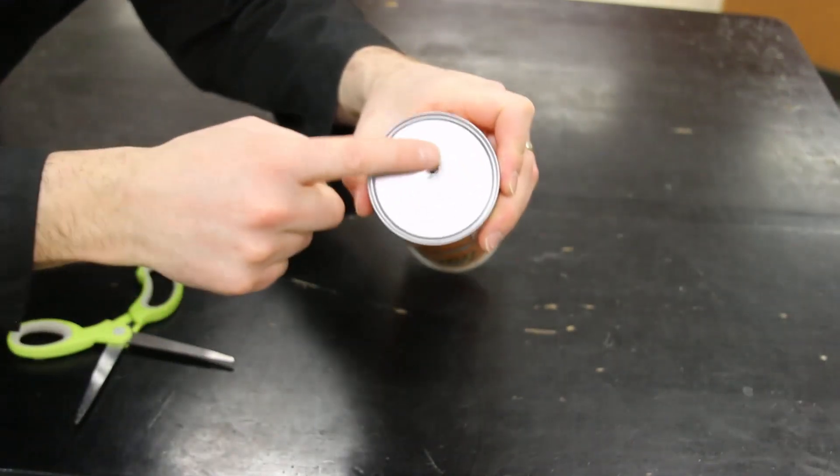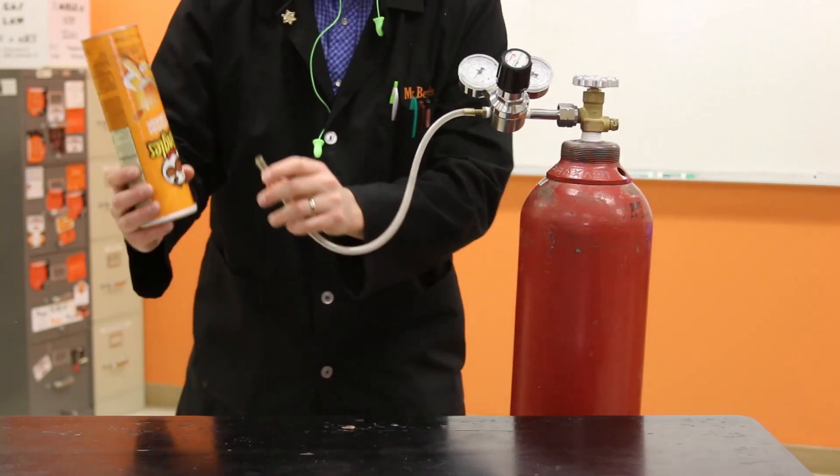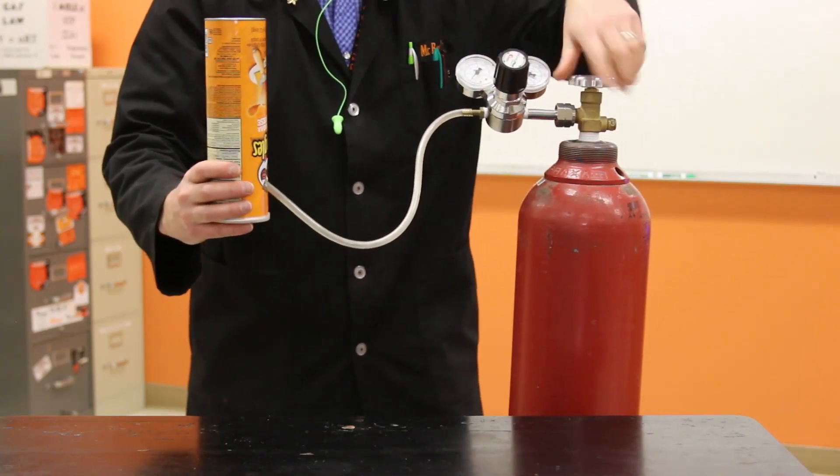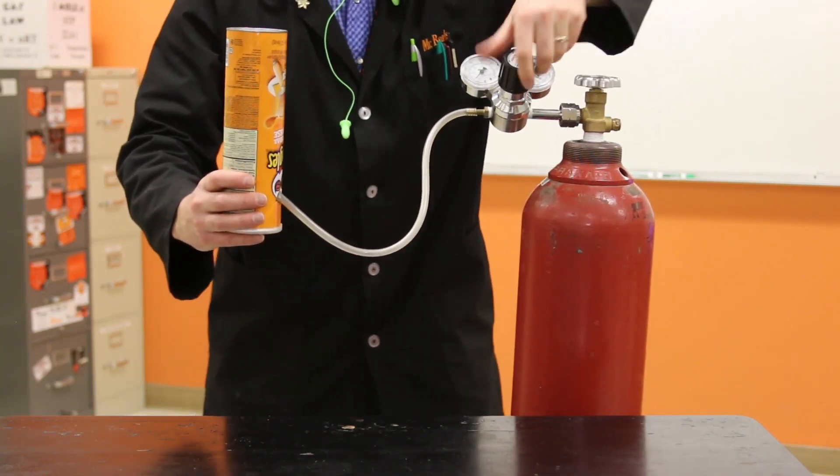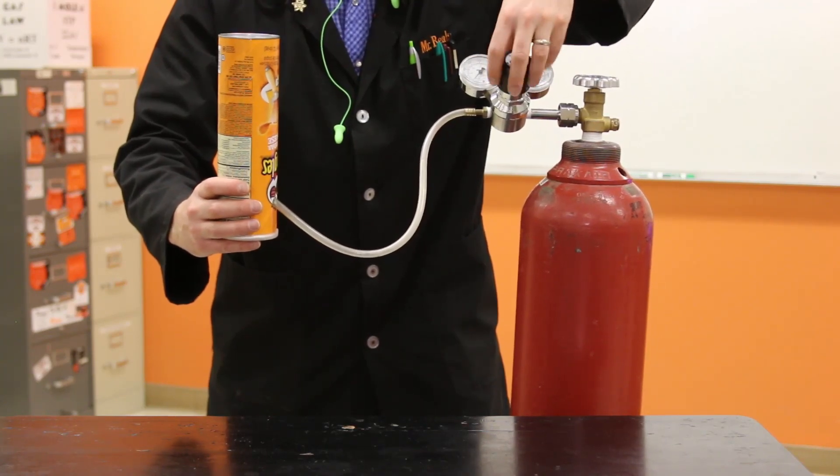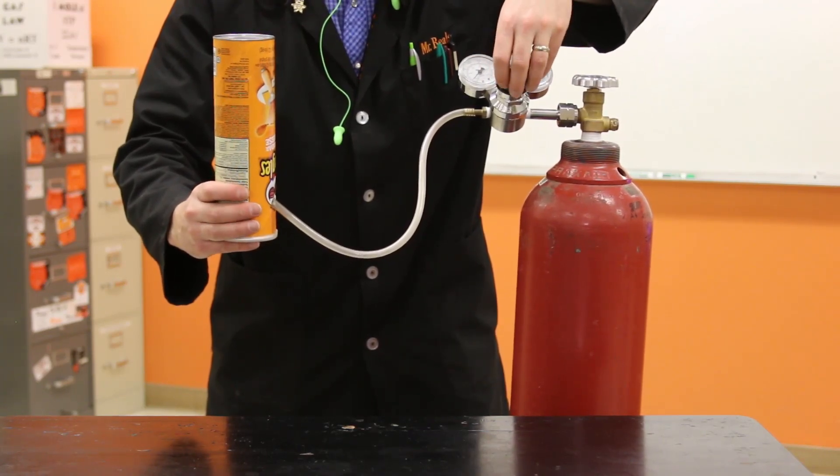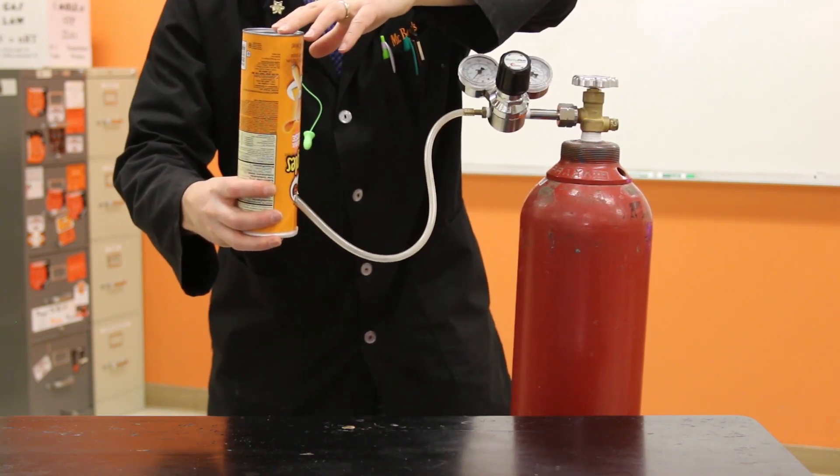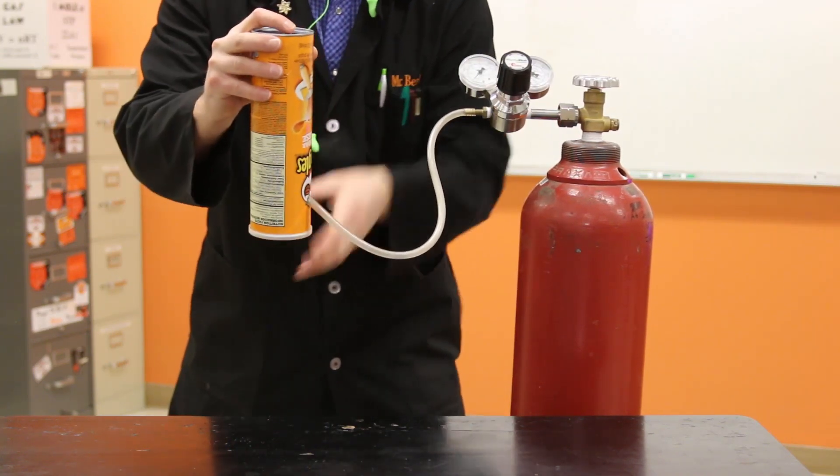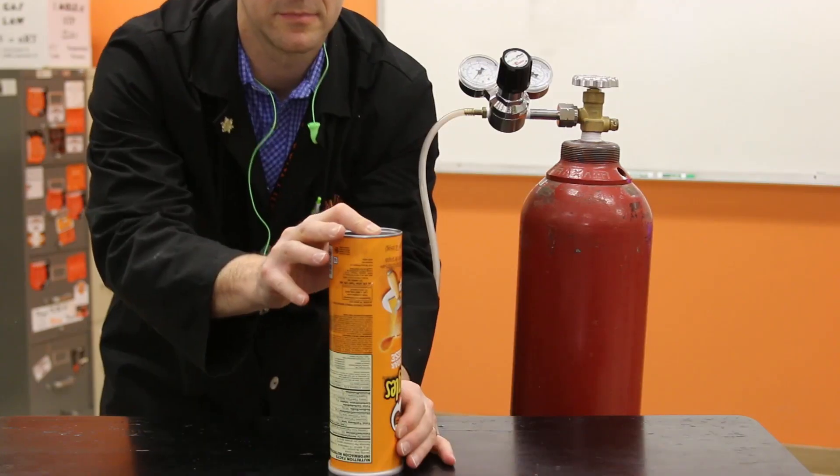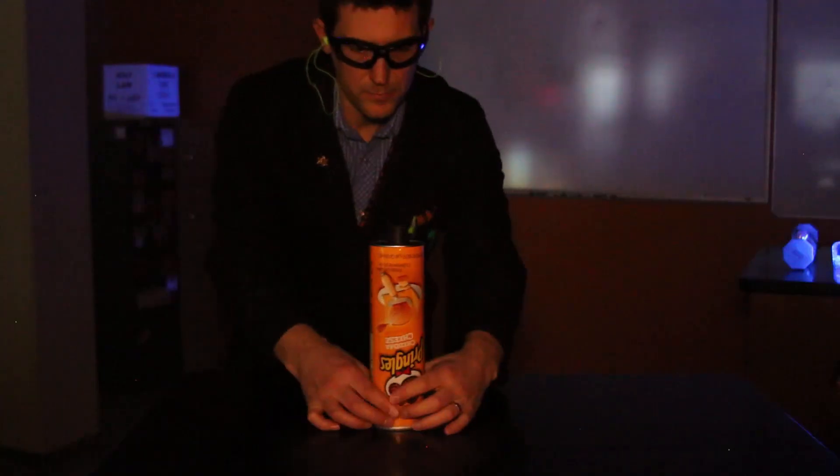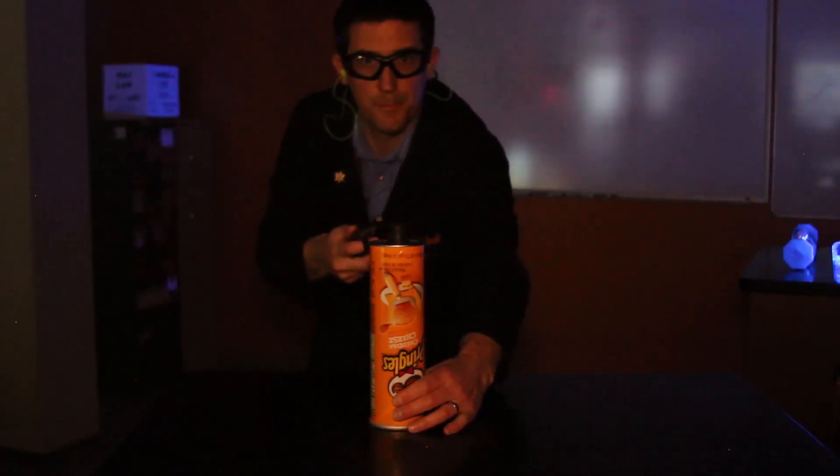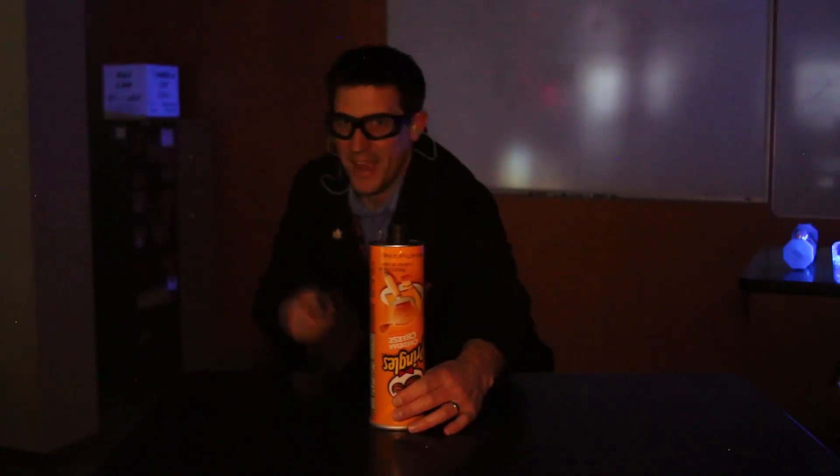You're gonna pop a hole in the bottom, which is now going to be the top, and that's where the gas is going to be able to come out. So I hook that back up to my hydrogen tank and fill it up. Now I want to fill it all the way up with hydrogen to get all of the oxygen and the other air out of there, that way it'll burn for a second instead of completely reacting and blowing up. I'm gonna light this bad boy up.